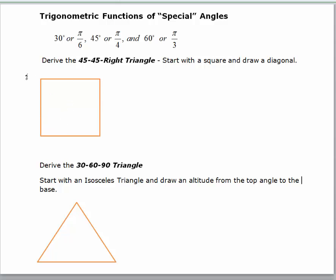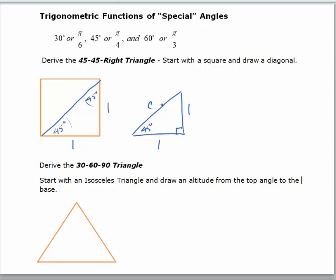The first thing we're going to do is draw a diagonal in the square. What we've done is basically cut the square in half. This square has sides of length 1. When I draw a diagonal across, I've also cut the 90-degree angle in half, so both of these angles are 45 degrees. Focusing on this special right triangle — it's an isosceles triangle because the two legs are the same. Since this is a right triangle, this angle is 90 degrees. Using the Pythagorean theorem, c squared equals 1 squared plus 1 squared, so c equals the square root of 2.